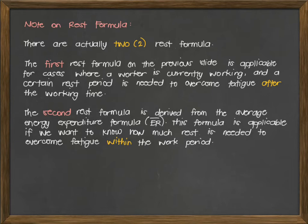Does it sound familiar? In our first example, 60 minutes was the total time the worker would work, and we wanted to allocate how much from the 60 minutes should be for working and how much for resting. That is where we apply the second rest formula. We derived the T rest recommended from the ER bar formula.